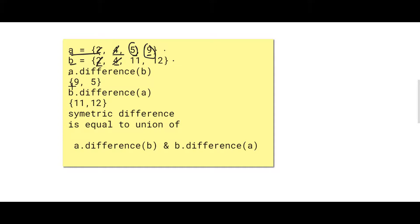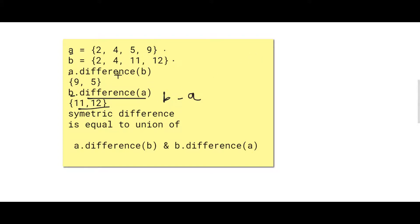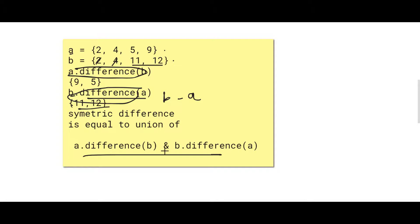The difference a.difference(b) gives us 9 and 5. In the reverse case, b.difference(a) will give us 11 and 12 — it calculates b minus a, cancelling out 2 and 4 and returning 11 and 12. The symmetric difference is the union of these two resulting sets, as shown here.